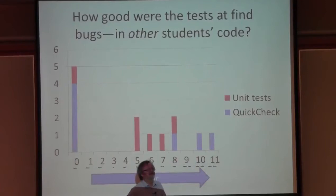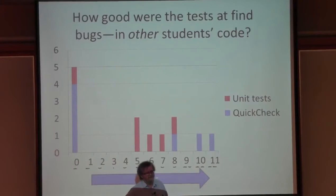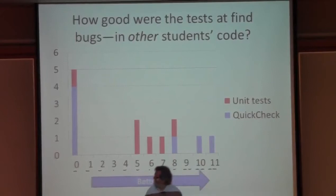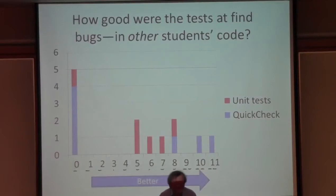An audience member asks whether the results could have been affected by how the task was phrased - perhaps a property-oriented framing led to better thinking. The speaker notes they tried to give problems of seven different sorts to minimise this, though with such a small experiment it's possible. Nonetheless, the conclusion is interesting: if you write the properties, they work very well, but evidently writing properties is harder than writing single test cases. It's essentially the same as saying it's easier to come up with examples than a formal specification.